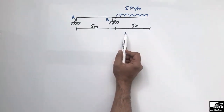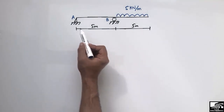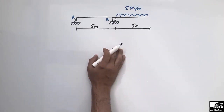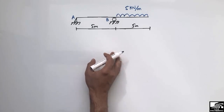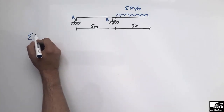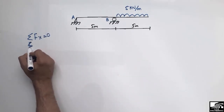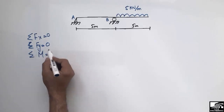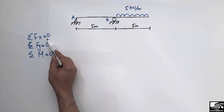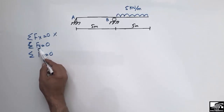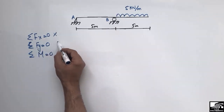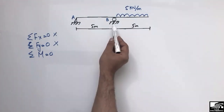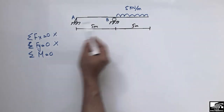To draw the shear force and bending moment diagram, we first have to find out the support reactions Ra and Rb. We can use three equations: summation of horizontal forces equal to zero, summation of vertical forces equal to zero, or summation of moments equal to zero. Since there is no horizontal force, the first equation is not useful. We have two unknowns, so we cannot directly use the vertical force equation alone.